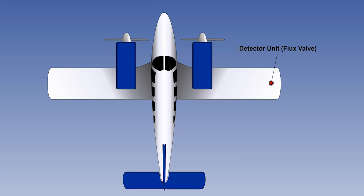The detector unit is positioned in a part of the aircraft least affected by onboard electrical fields. This is usually the wingtip or tail fin, where any aircraft-generated magnetic disturbances are at a minimum.